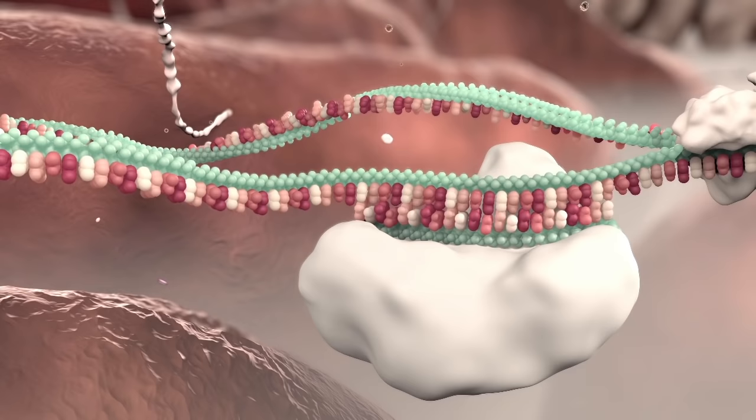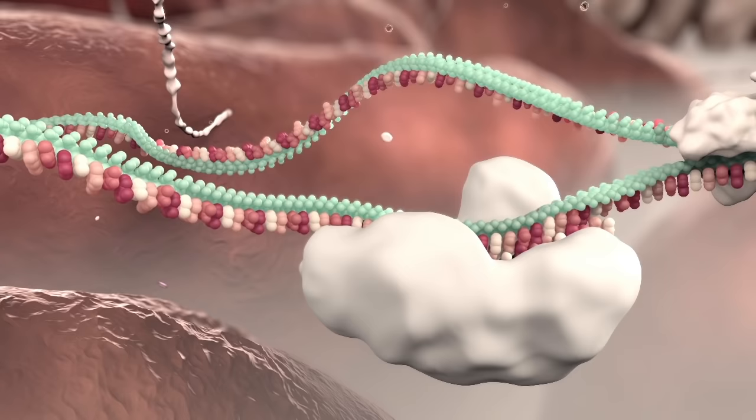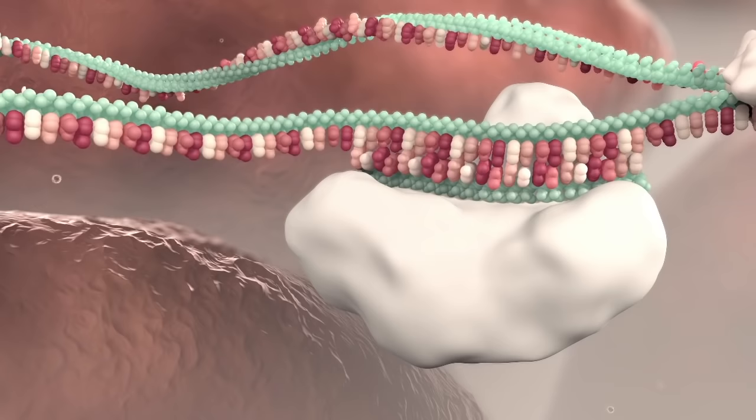Once bound, there are two ways in which RISC can inactivate the mRNA. Proteins in the complex can simply cut the messenger RNA, which will be further destroyed by the cell.